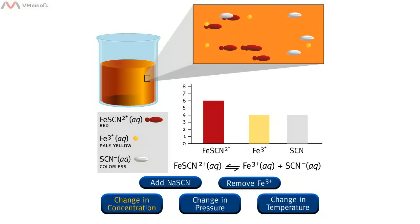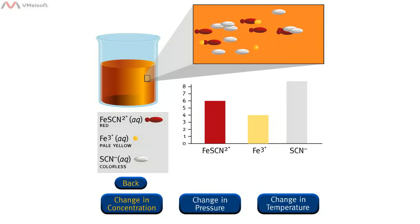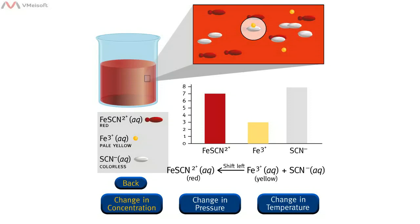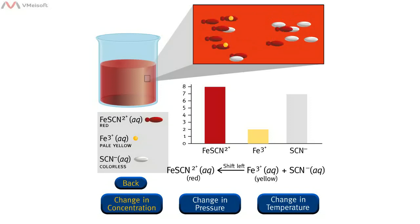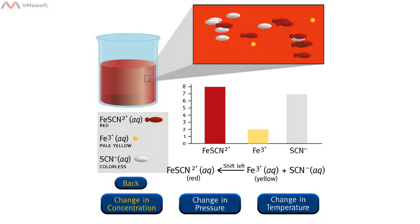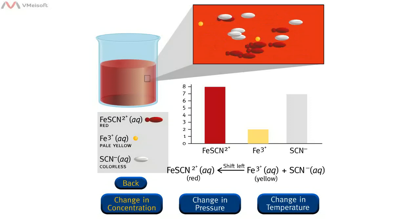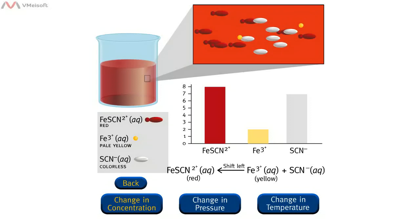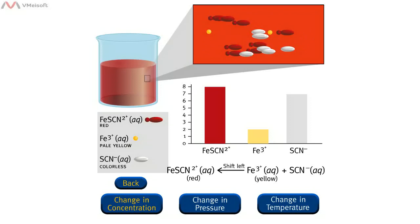In this case, the stress applied to the equilibrium system is an increase in the concentration of thiocyanate, SCN⁻. To offset this stress, some iron 3+ ions react with some of the added thiocyanate ions, and the system shifts from right to left to reestablish equilibrium. When the system shifts to the left, iron thiocyanate ions are produced, which have a red color. Consequently, the red color of the solution deepens as more iron thiocyanate ions, Fe(SCN)²⁺, are produced.